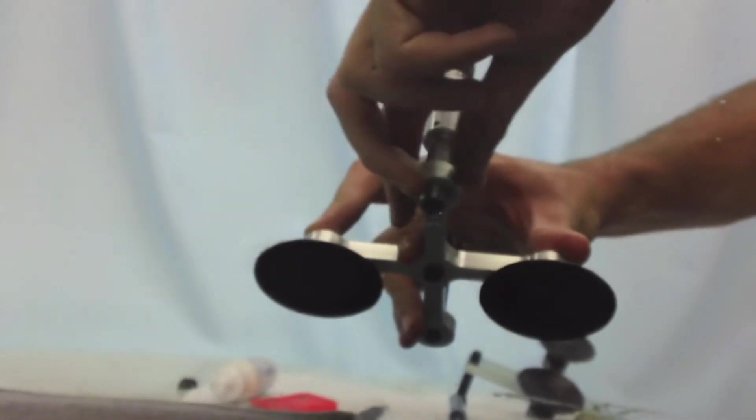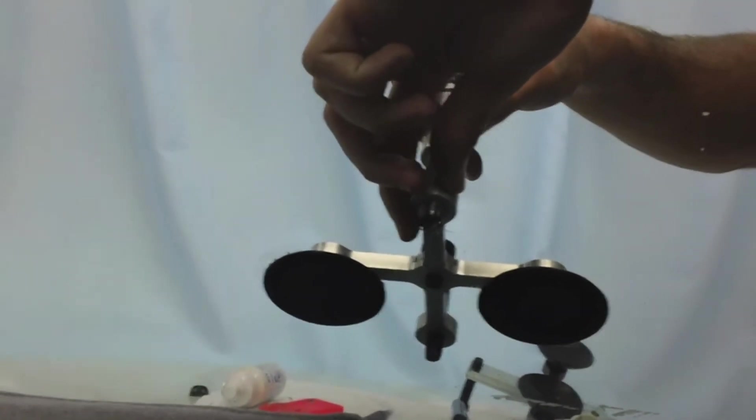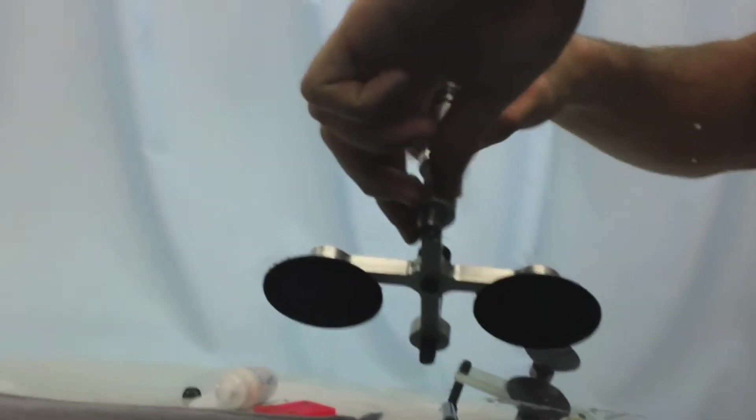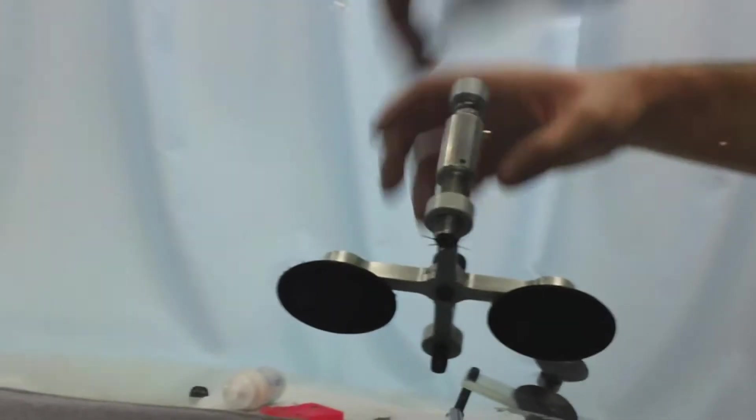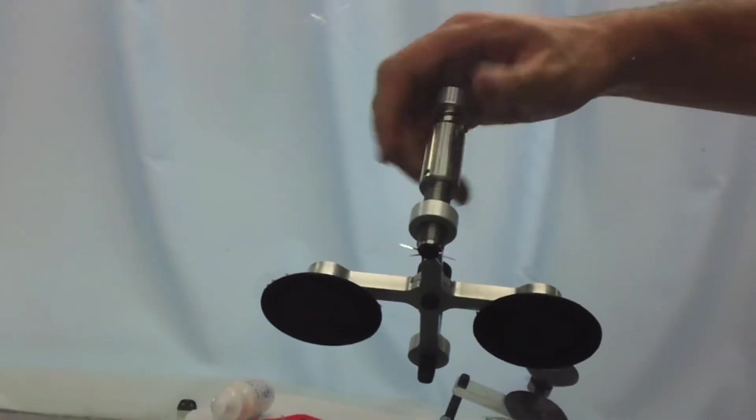Now we're going to push the two suction cups down, then the leveling bolt. You want to tilt the injector forward, and then turn your cylinder, then you turn your cylinder and level off the tool.